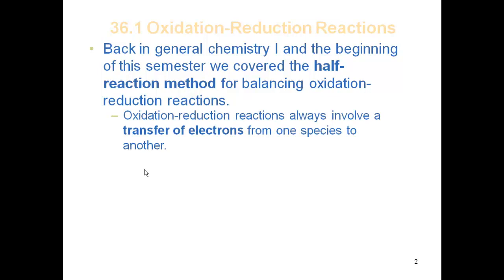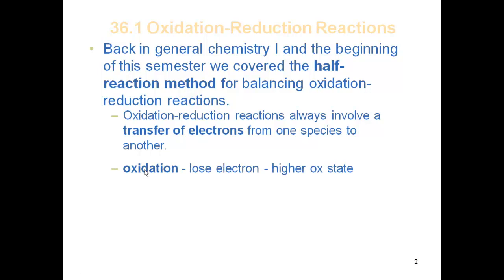Oxidation-reduction reactions always involve a transfer of electrons from one species to another. This is why we refer to them as redox reactions — a reduction and an oxidation process. Both have to be present for the whole reaction to occur. Something is going to be giving up electrons, and something else has to be taking them.